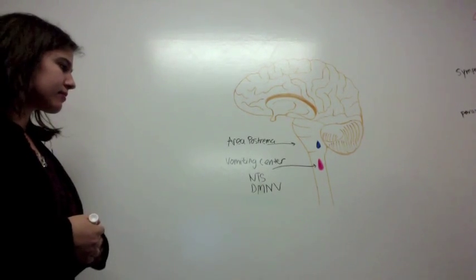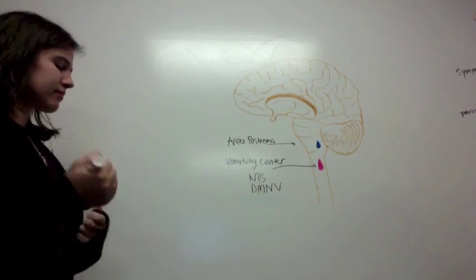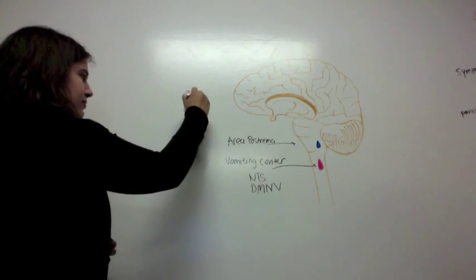First, we will describe the neural pathways of vomiting. The process of vomiting involves both the central and peripheral nervous systems.